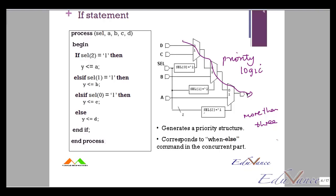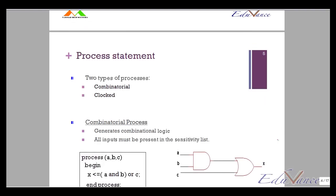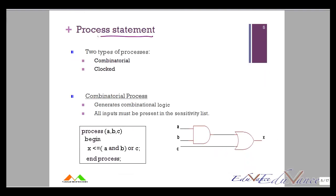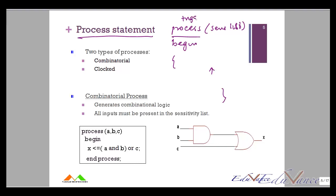Now, taking these if statements, we need to define them inside a process. Remember, a process is always written with a sensitivity list — all those signals that, when they change, will trigger this process. For example, if we write A, B, and C in the sensitivity list, then whenever A, B, or C changes, this process is executed.